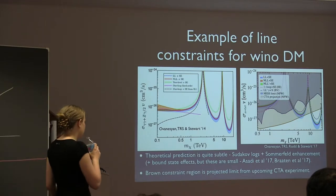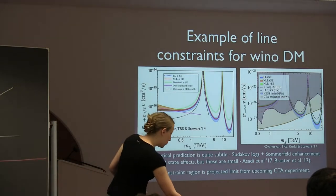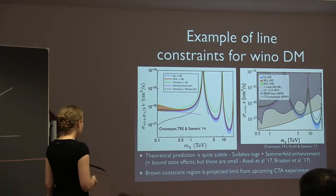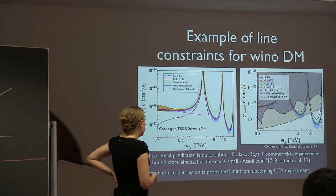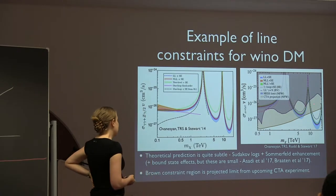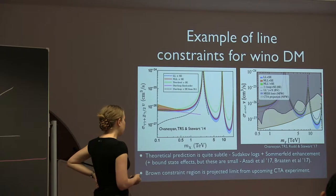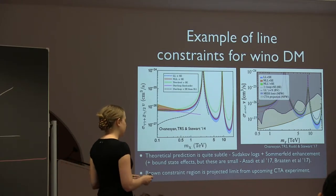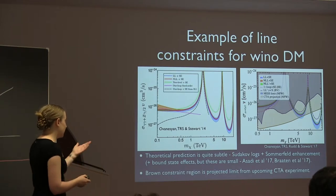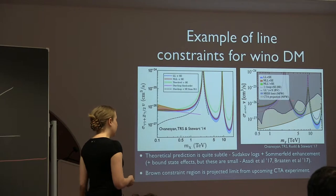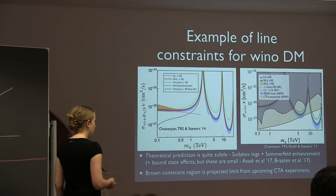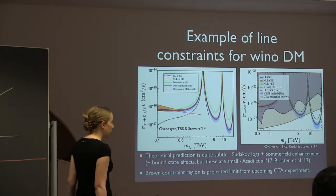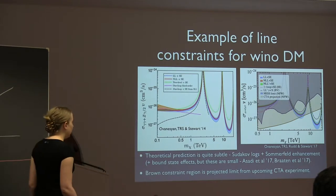This is a case where theoretical precision better than a factor of three or four requires some sophistication. The cross-section to line photons in these models can be around the thermal relic cross-section or significantly higher at late times. The right-hand plot compares this to existing line constraints from HESS assuming an NFW cusped profile: if our galaxy has a dark matter cusp, Wino-like dark matter as 100% of dark matter is ruled out below about 4 TeV, while the natural thermal mass scale is about 2.5 to 3 TeV.